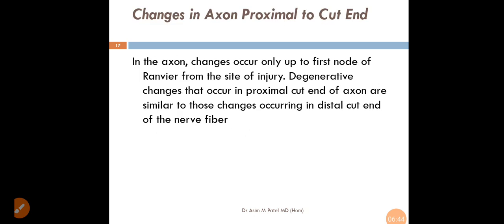Then, the changes in the axon proximal to the cut end. In the axon, changes occur only up to first node of Ranvier from the site of injury. Degenerative changes that occur in proximal cut end of axon are similar to those changes occurring in distal cut end of the nerve fiber.